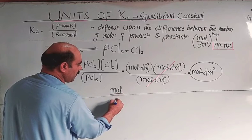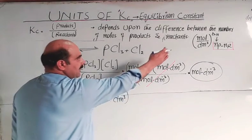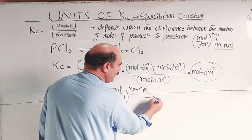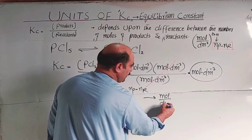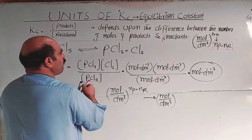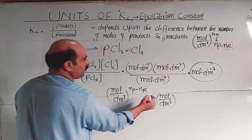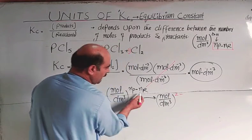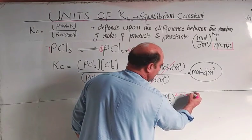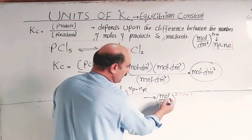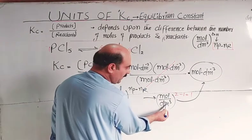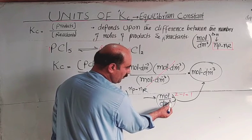After cancellation, the unit of Kc = mol per decimetre cube to the power delta n. Delta n = number of moles of products minus number of moles of reactants. Products: PCl₃ is 1 mole, Cl₂ is 1 mole — total = 2. Reactants: PCl₅ = 1 mole. Delta n = 2 minus 1 = 1. Unit = mol/dm³ to the power 1, which is simply mol per decimetre cube.